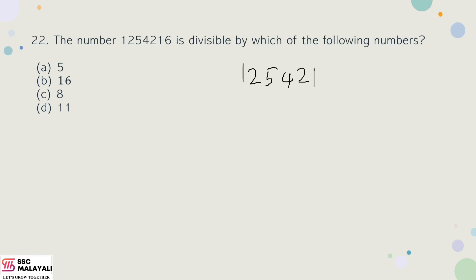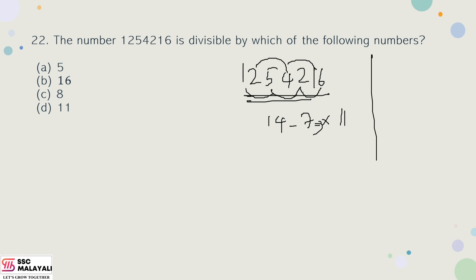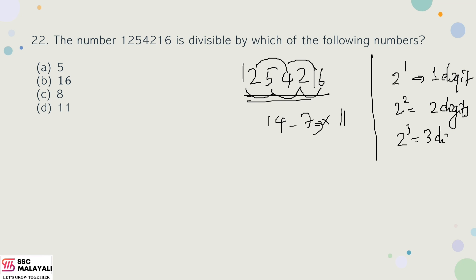Question 22: Divisibility check. We check which number (like 125421) is divisible. For divisibility by 11: sum of alternating digits — 1 + 5 + 2 = 8 and 2 + 4 = 6, difference is not a multiple of 11. Checking divisibility by other factors as well. Option C is the answer.